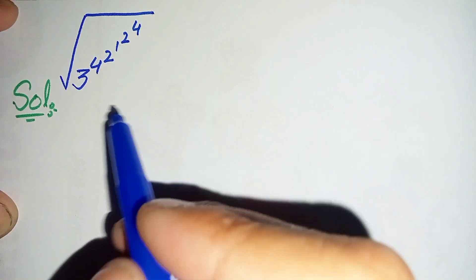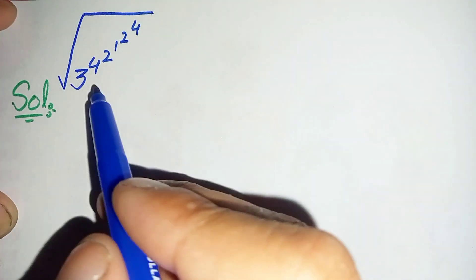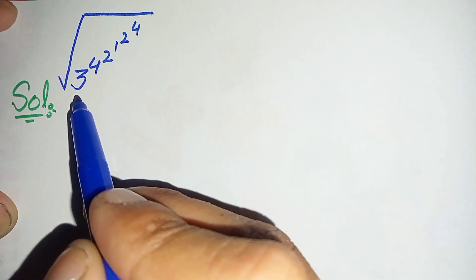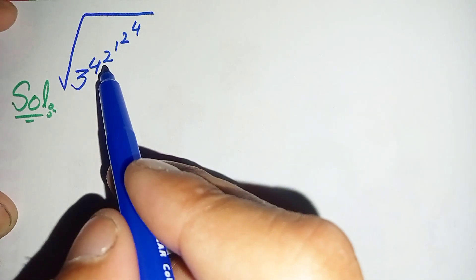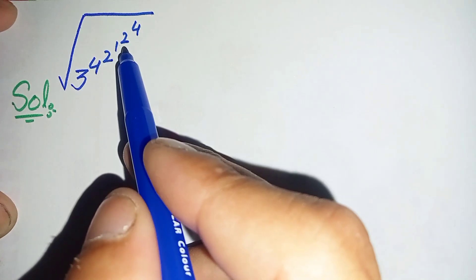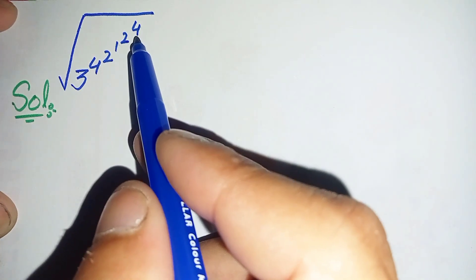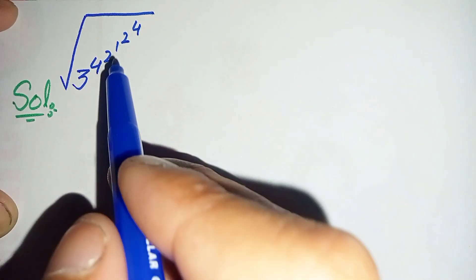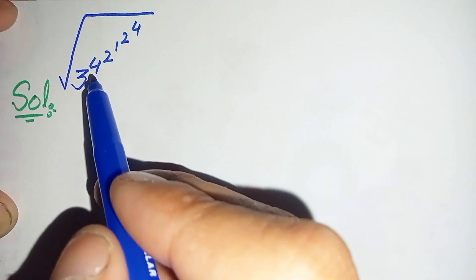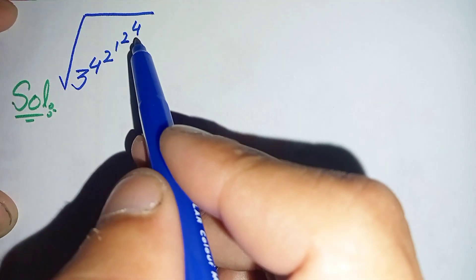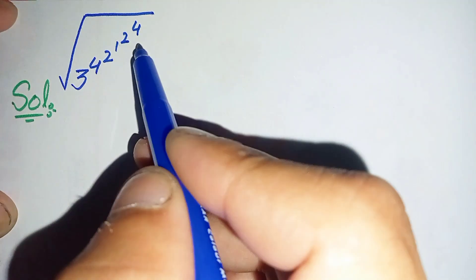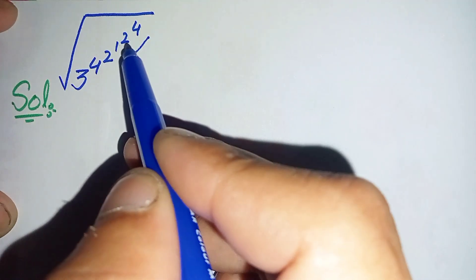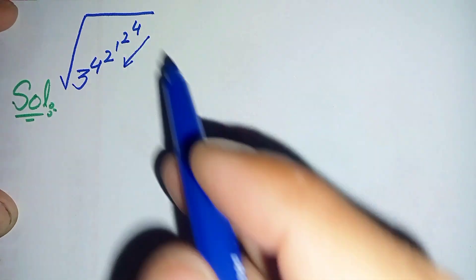Hello, you are welcome. How to solve this nice square root math problem: the square root of 3 raised to power 4, raised to power 2, raised to power 1, raised to power 2, raised to power 4. To solve this problem, we will try to solve the powers from the top to bottom, so we will start to solve 2 raised to power 4 first.